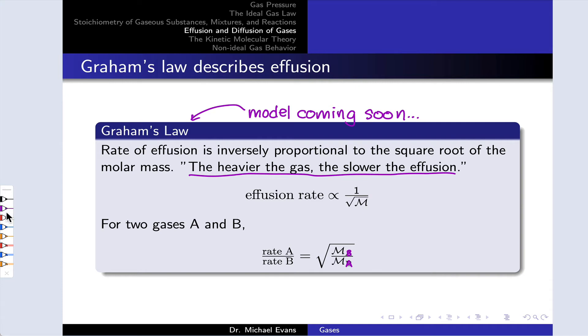And mathematically, the rate of effusion is proportional to one over the square root of the molar mass of the gas. If you think through this, heavier gases will have a larger molar mass. So the square root of the molar mass will be larger, and thus they'll effuse more slowly.